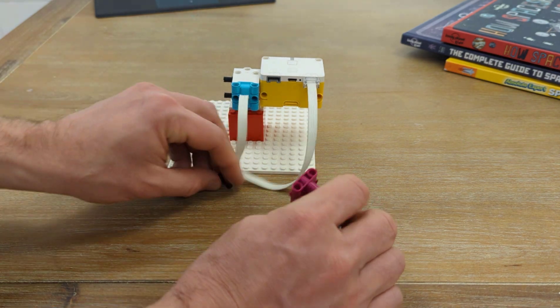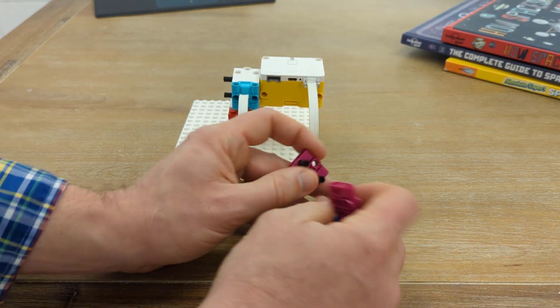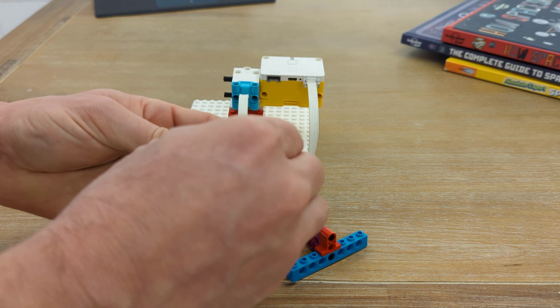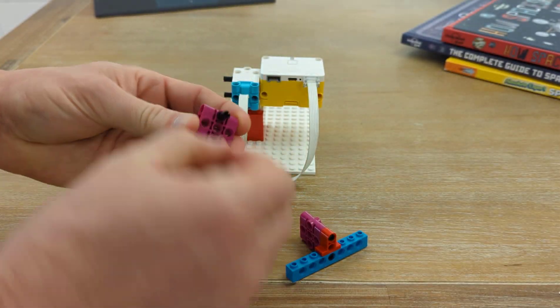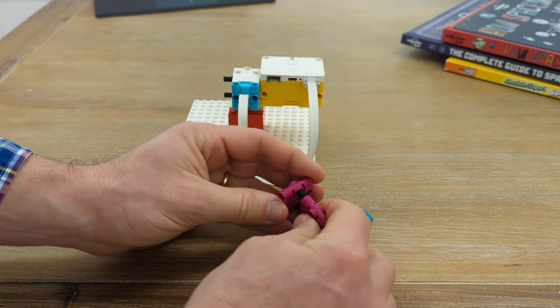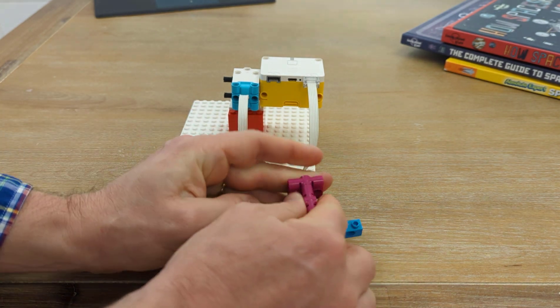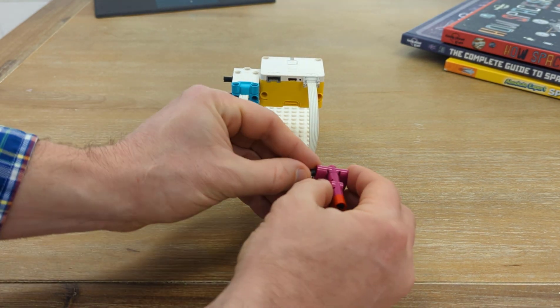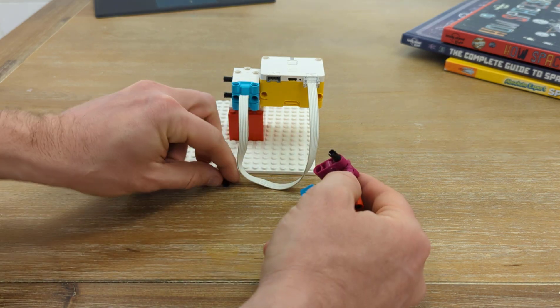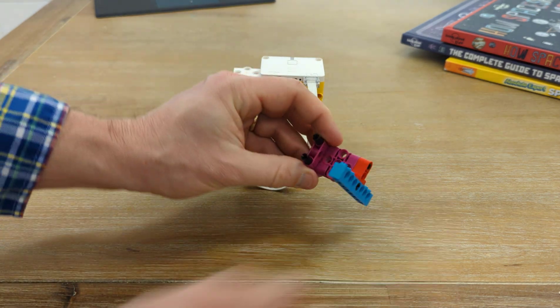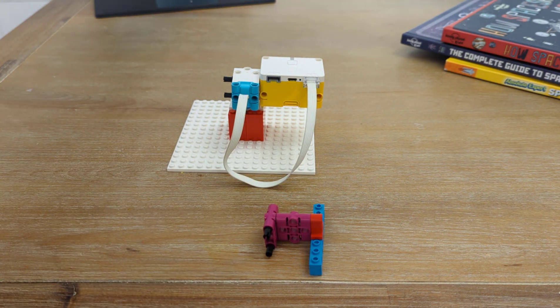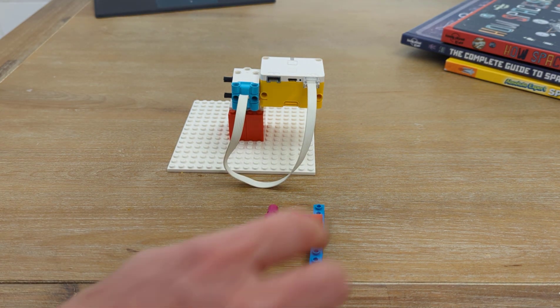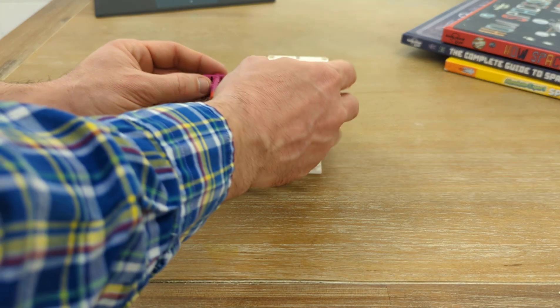And some more Technic connectors on the side. And I attached that wrong. I want to turn it so that these two holes are on top of each other, which will help it to attach to my next motor. So we've got a solid little piece right there that should be able to hold on to the motor as it spins.